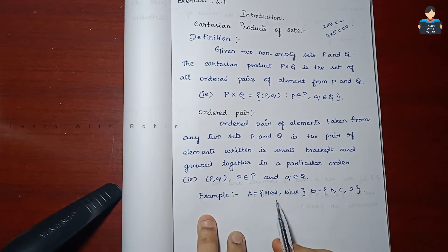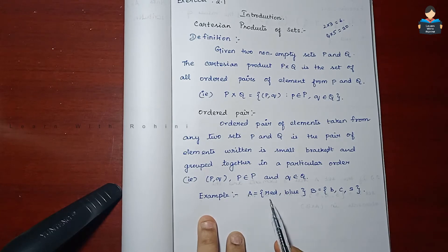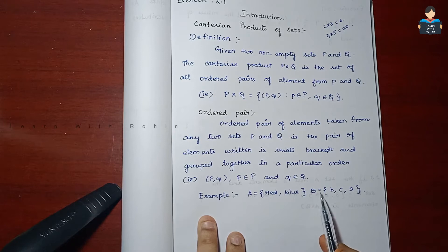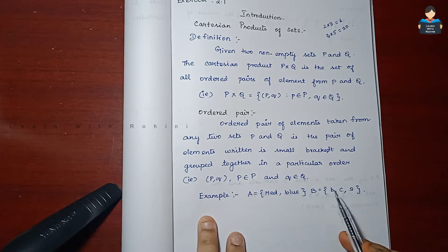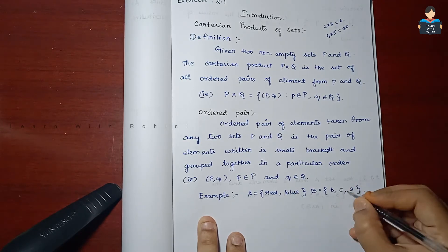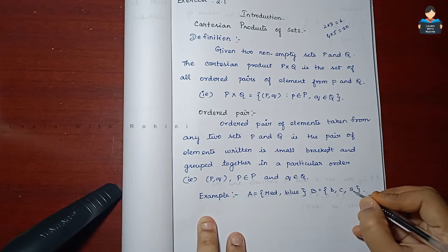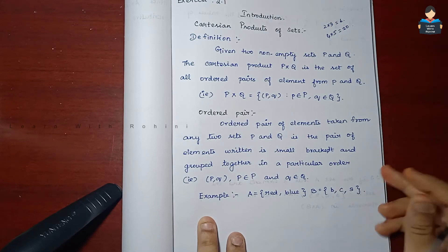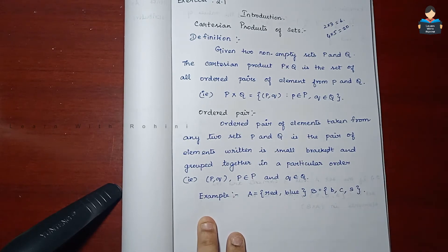Here we go. Set A has colors: red and blue. Set B has objects: ball, chair, sofa, and table.